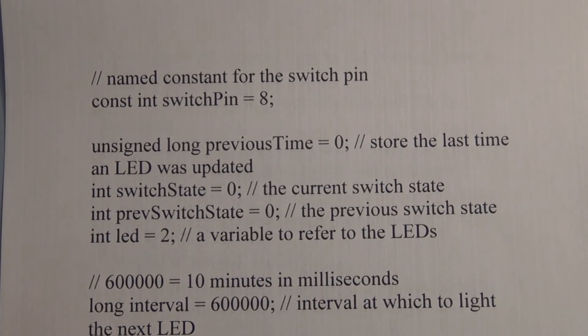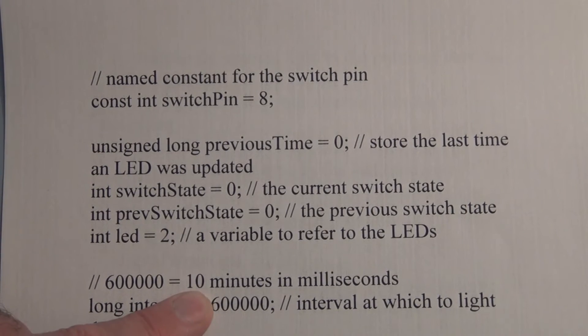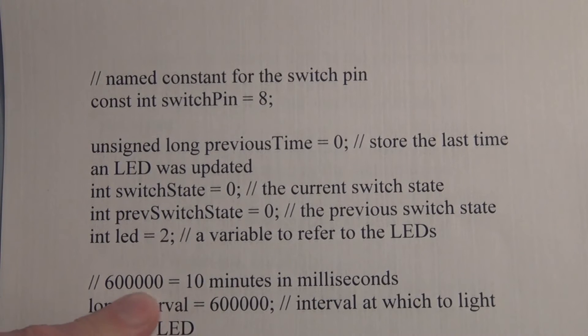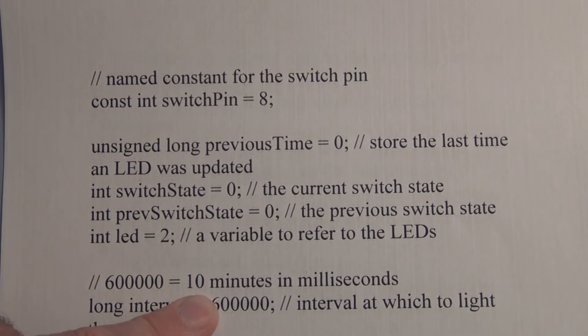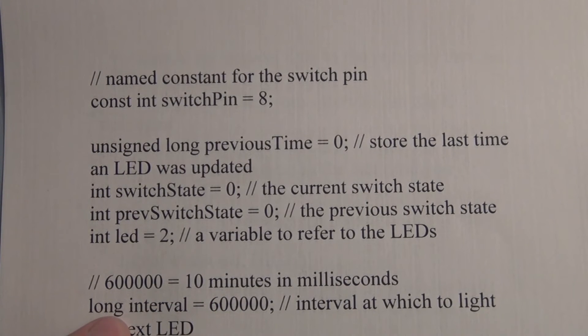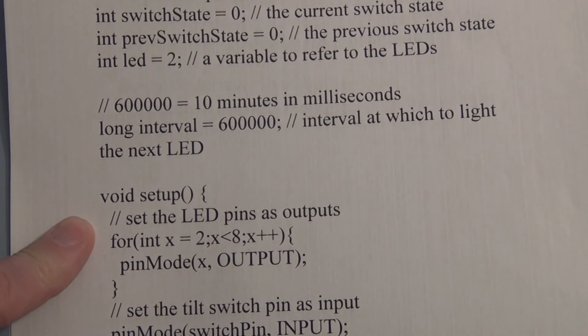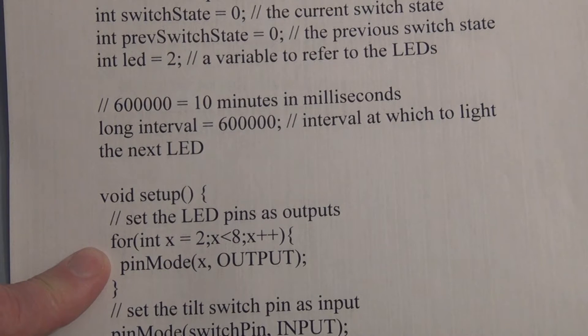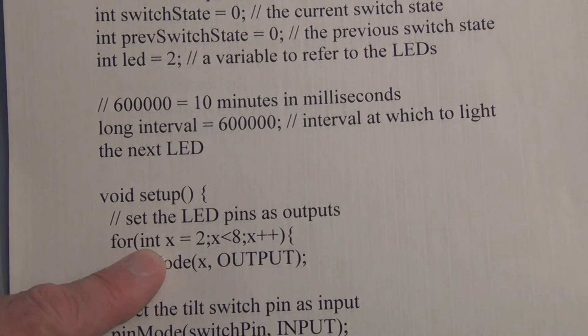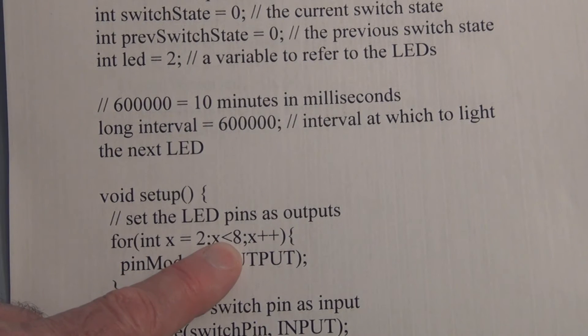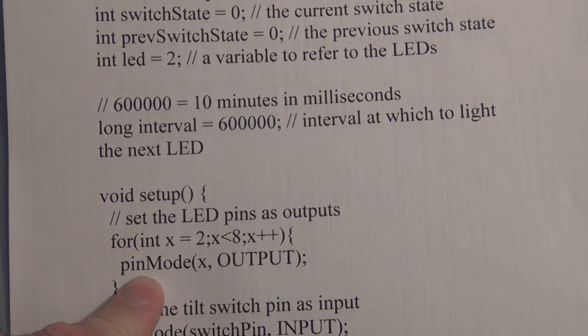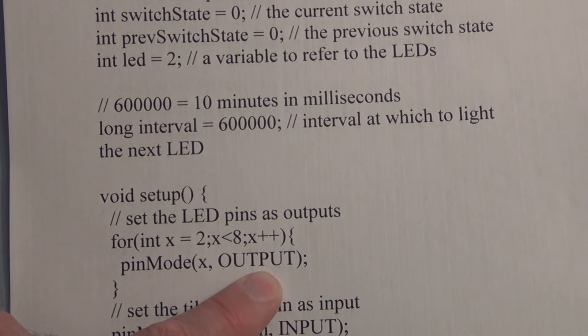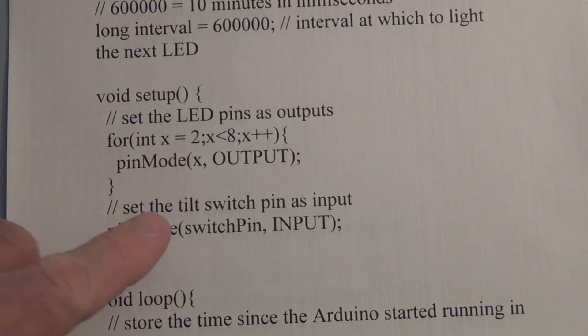This circuit is an hourglass where each LED lights after ten minutes. If you calculate, we've got one thousand milliseconds per second, and that's sixty thousand milliseconds per minute, and six hundred thousand milliseconds in a ten-minute period. So each interval is six hundred thousand milliseconds. Here we use a for loop to initialize pins two through seven as outputs. We have integer x equal to two, and for x less than eight, increment x, and pinMode x, and for each x declare it an output. Here we set the tilt switch pin as an input. We use pinMode switch pin input.